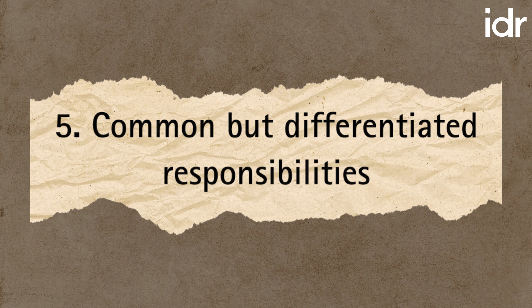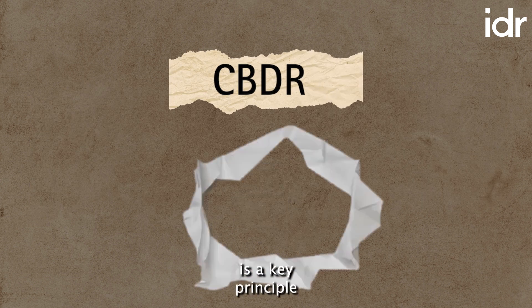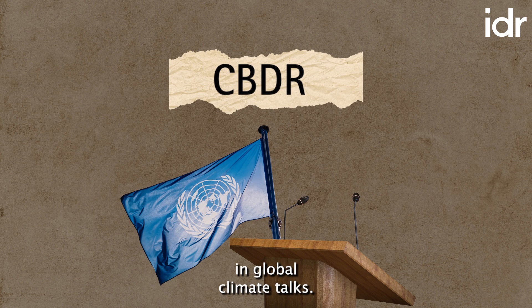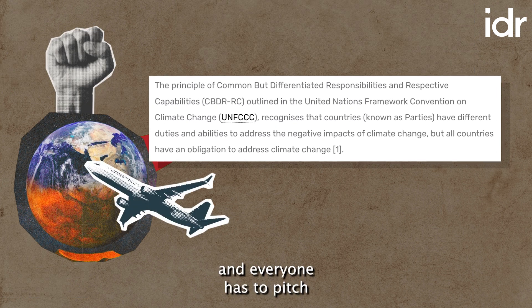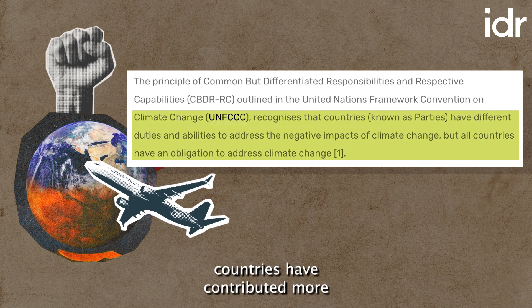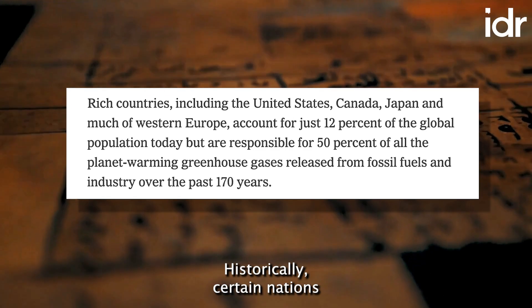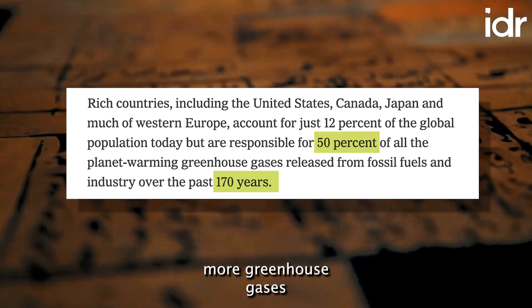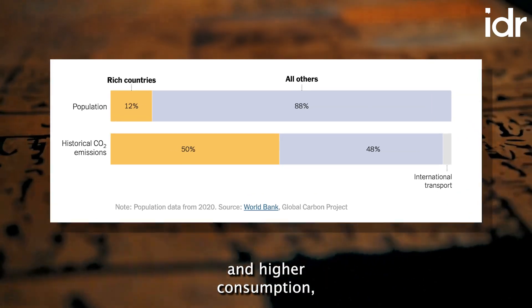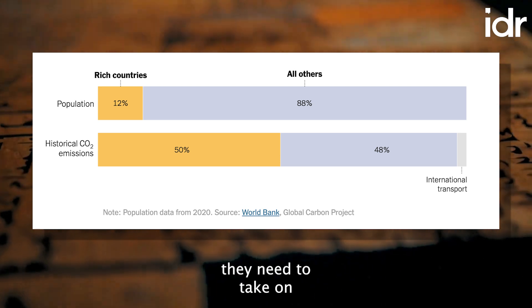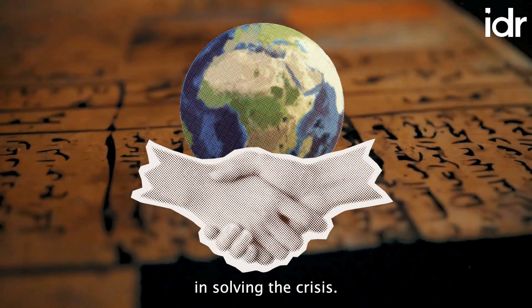Common but Differentiated Responsibilities, or CBDR, is a key principle in global climate talks. It basically says that while the climate emergency is a global issue and everyone has to pitch in, some countries have contributed more to the problem than others. Historically, certain nations have emitted more greenhouse gases because of their industrial activities and higher consumption, and so they need to take on a bigger role in solving the crisis.